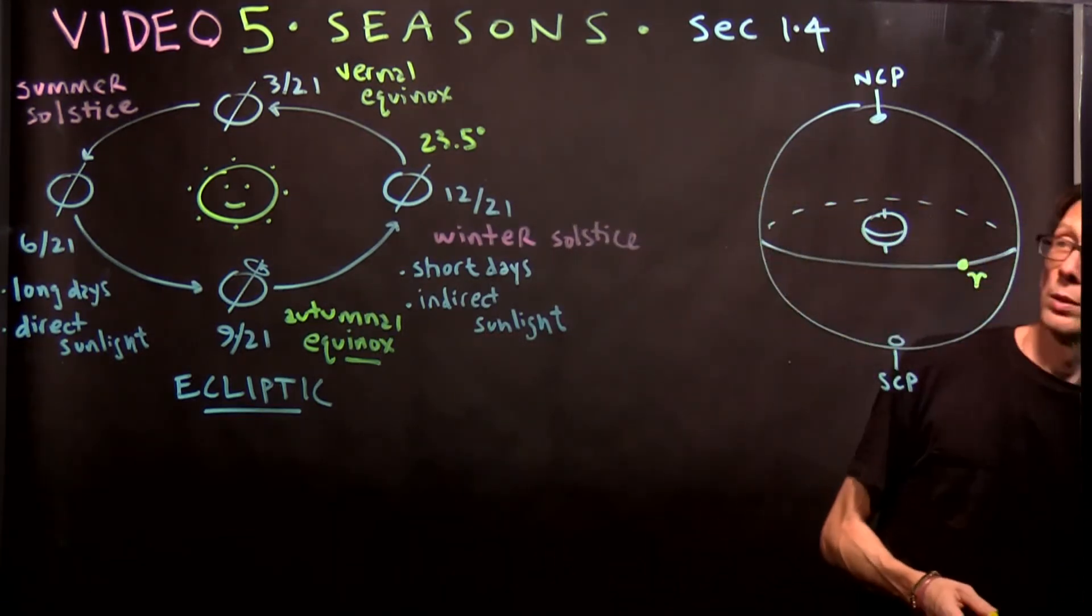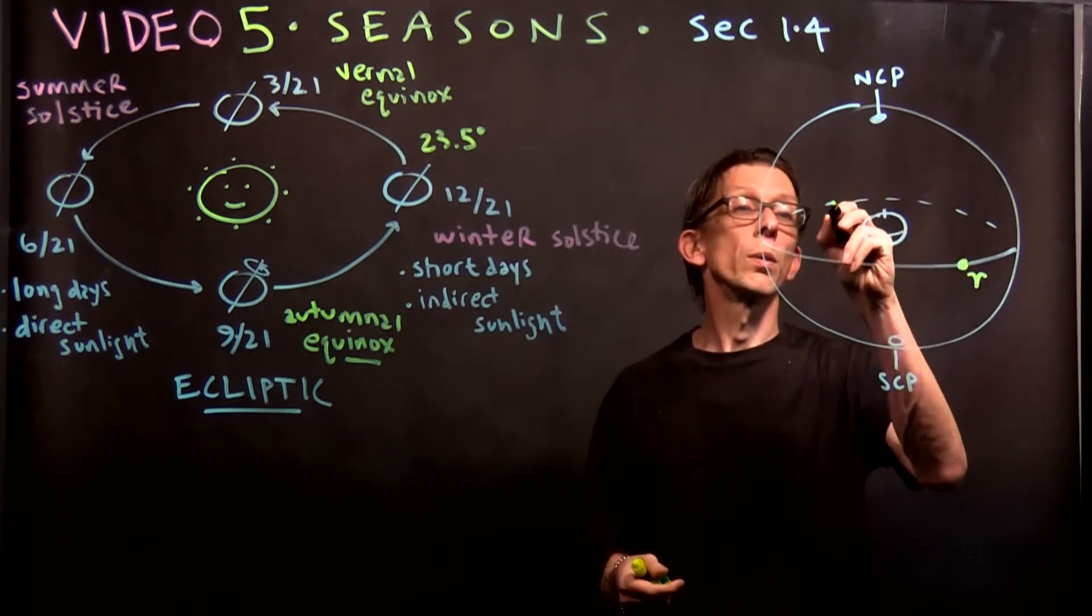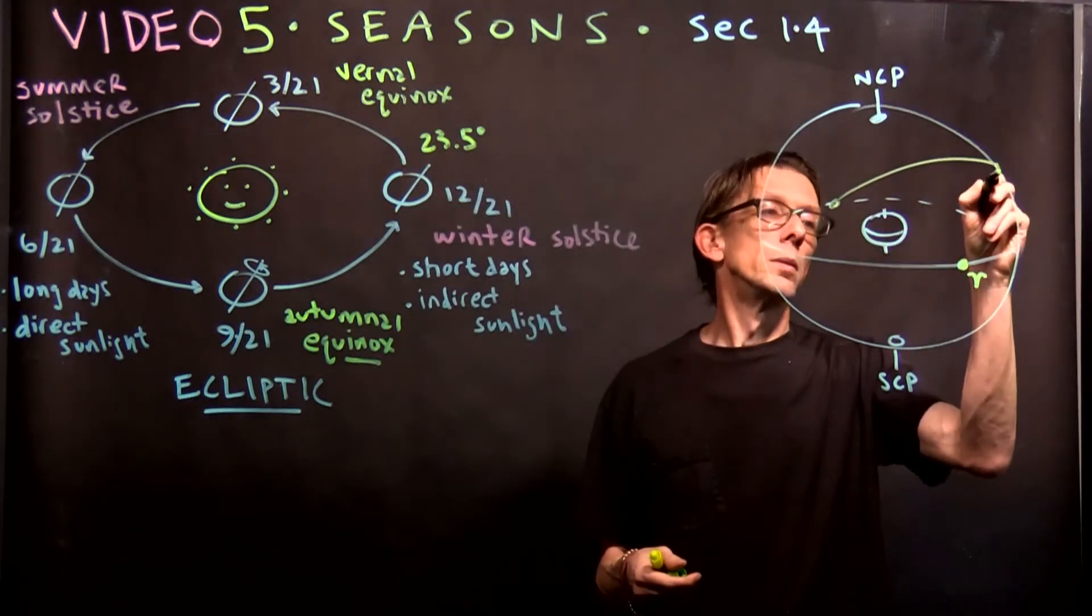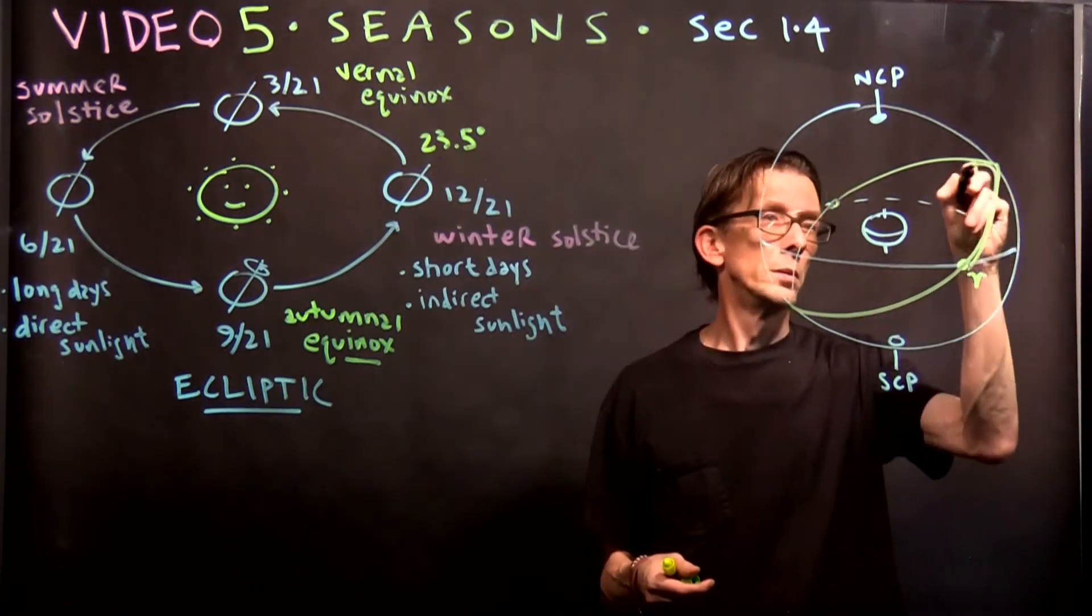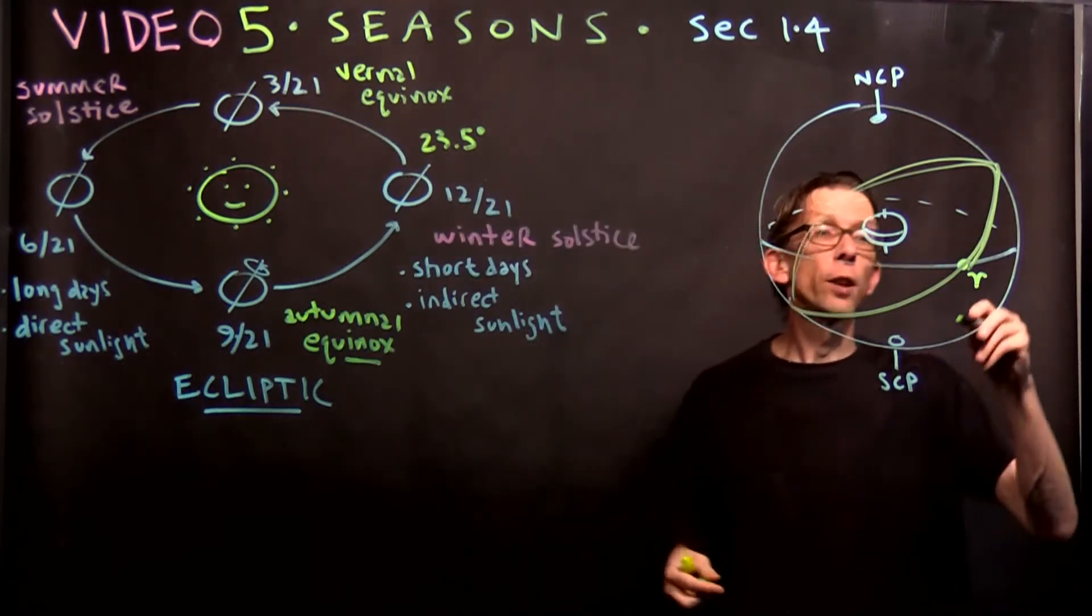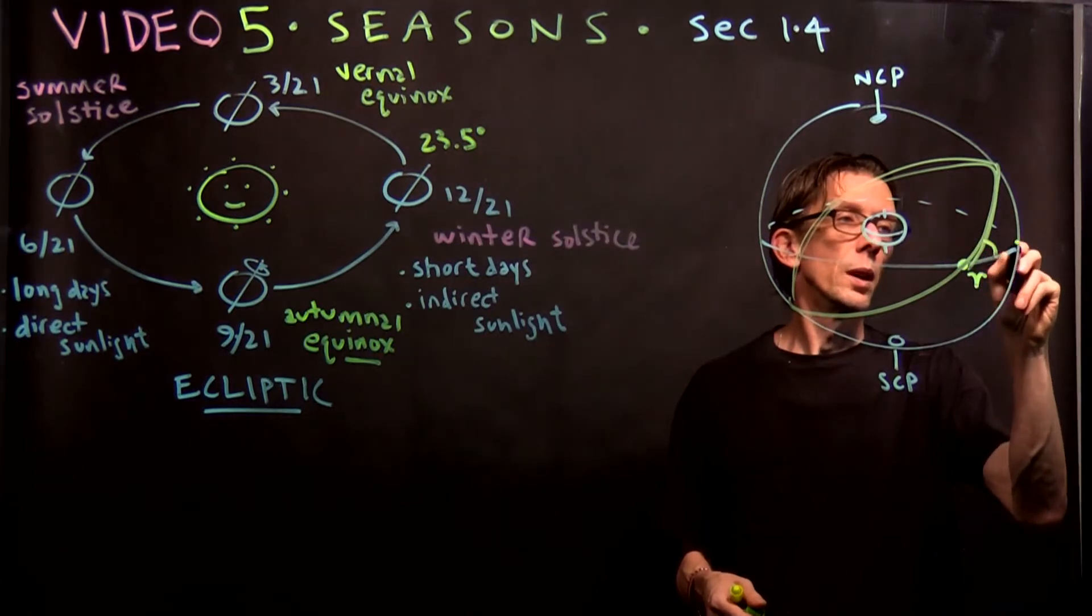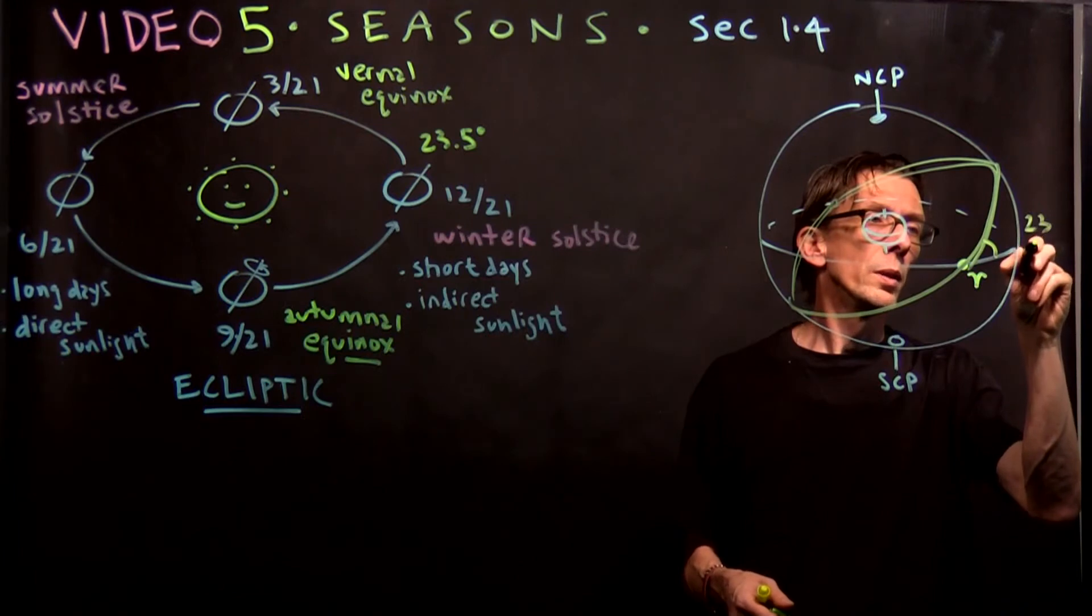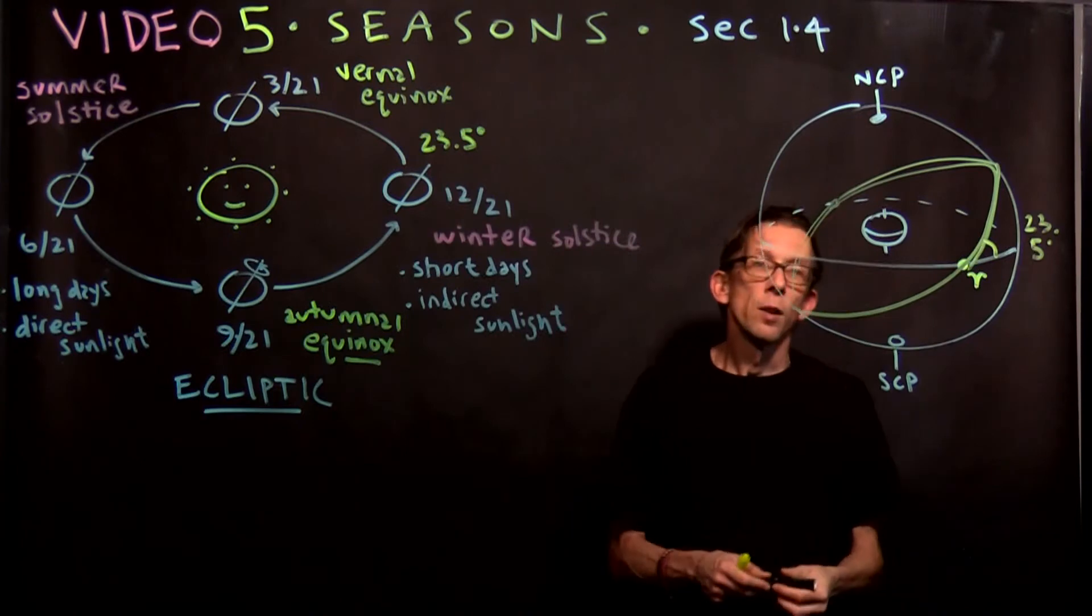And for thousands of years, they thought it did. Because for all obvious purposes, it does. Here, it takes the earth one year to go around the sun. The ancients believed that it took the sun one year to go around the earth. And the path it takes is a path that looks something like this.